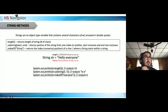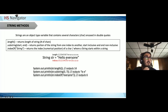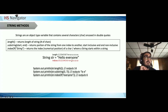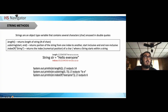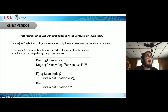`.indexOf("everyone")` looks for the index where 'everyone' starts — it would return 6 if it starts at index 6. The length is always the number of indices plus one. With `substring`, you start at the given index and print every character up to the last index minus one.